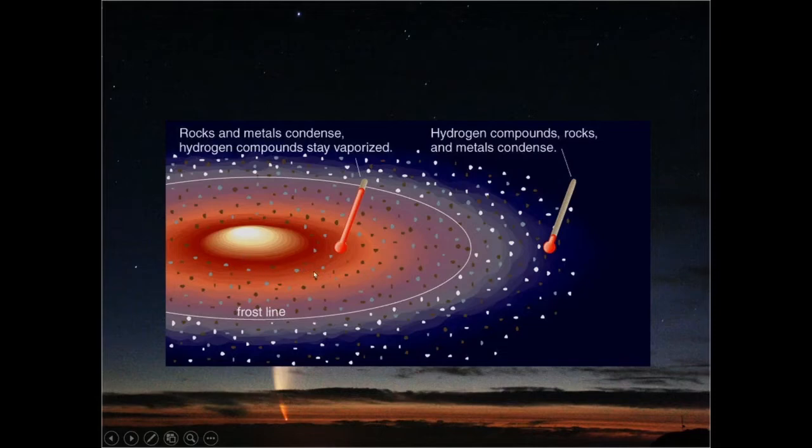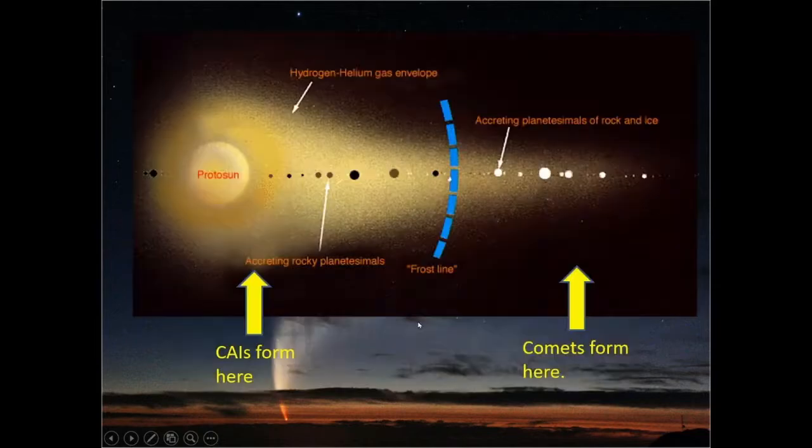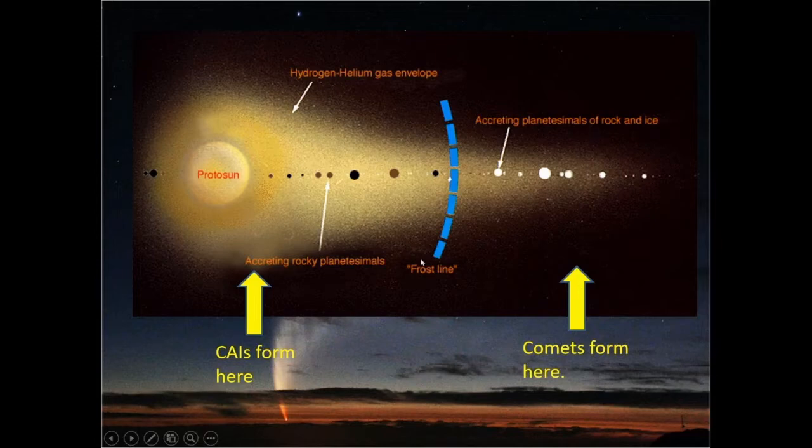I do have information on where it forms. The space around a star is hotter than further out, and inside what's called the frost line you get rocks and metals condensing, but the hydrogen compounds like water stay vaporized. But outside that it gets colder and the water condenses and you get comets forming. Our frost line is somewhere in the asteroid belt. Water has a different condensation temperature than, say, ammonia. Comets form further out, but the calcium aluminum intrusions that were found on the comet form close to the sun, so there must have been some mixing process. Studying comets tells astronomers a lot about how solar systems form.